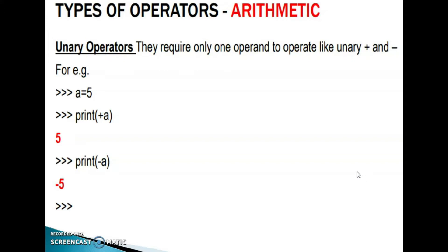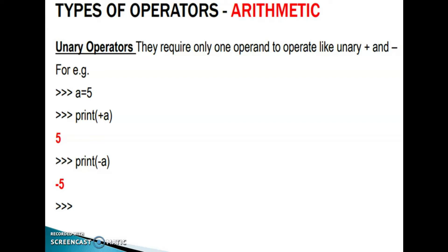Arithmetic — unary operators. They require only one operand to operate, like unary plus and minus. Example: a is equal to 5. Print positive a — that is 5. Print negative a — that is negative 5. Unary operators require only one operand; the operators are plus and minus, representing positive and negative.